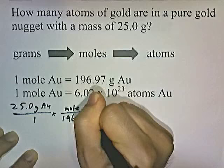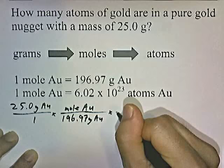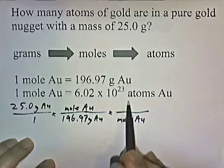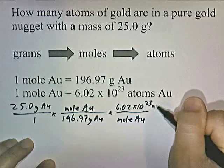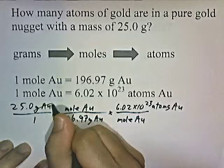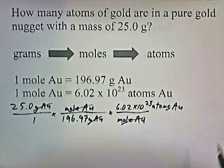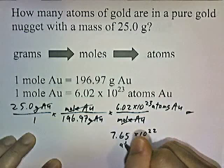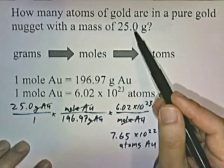By doing that, I'll have converted grams into moles. Now we want to convert moles into atoms. I have moles on top; I want to get rid of it, so I need to put moles on the bottom. Then one mole of gold is the equivalent of 6.02 times 10 to the 23rd atoms of gold. Grams of gold cancel, moles of gold cancel, and I'm left with atoms of gold. 25 times that number divided by that number gives 7.65 times 10 to the 22nd atoms of gold. So if you have that much gold, that's how many atoms will be in it.